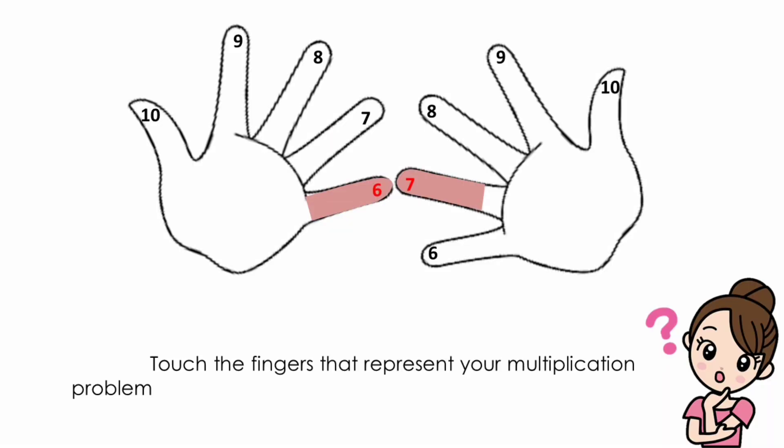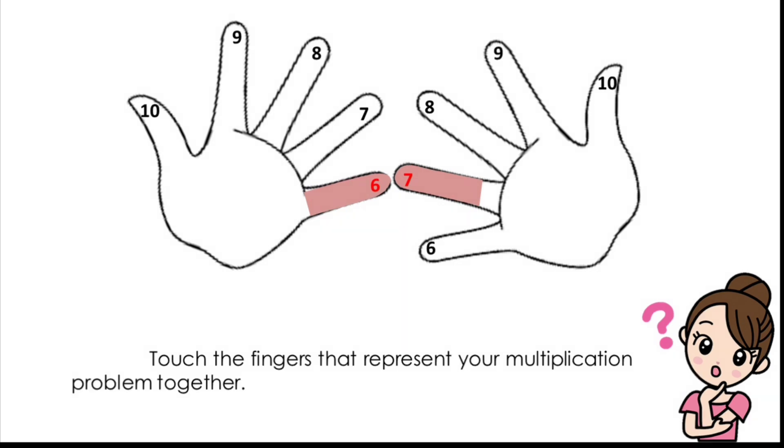Touch the fingers that represent your multiplication problem together. For example, if you want to figure out the problem 6 times 7, you would touch your left pinky with your right ring finger. Your left fingers represent the number on the left of the problem, and your right fingers represent the numbers on the right of the problem.